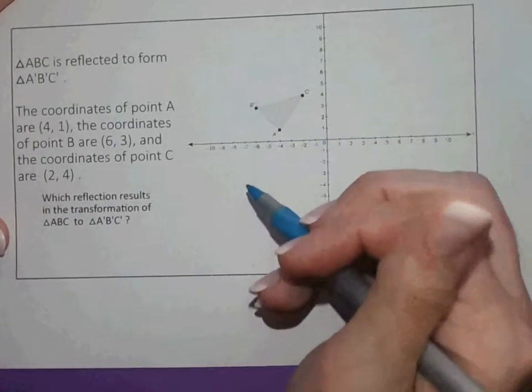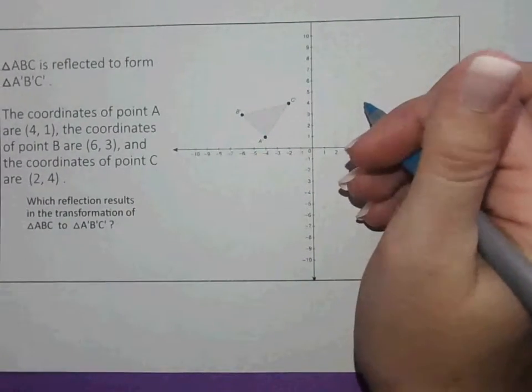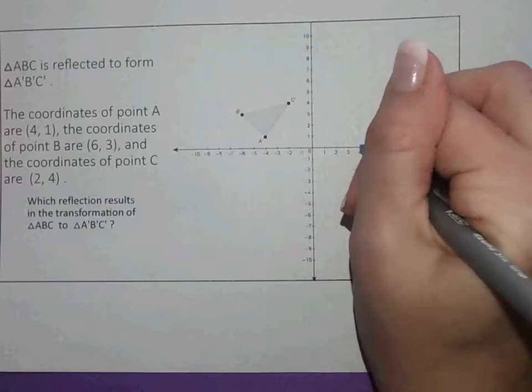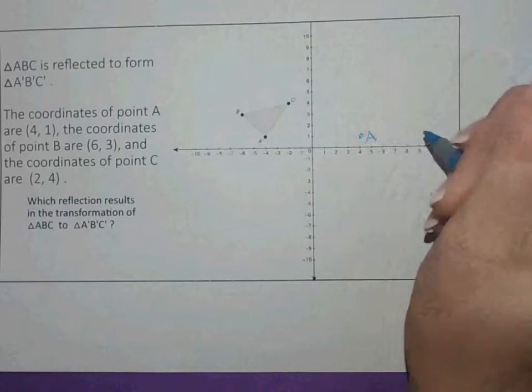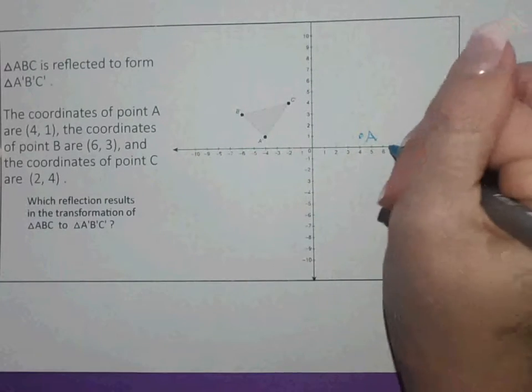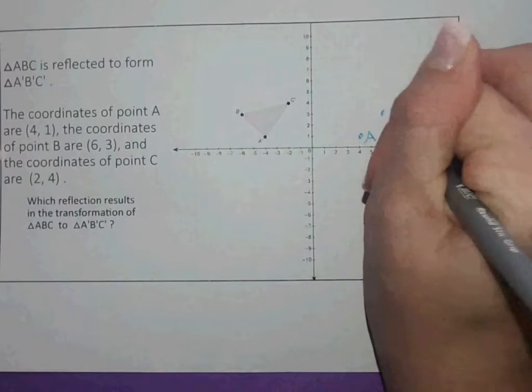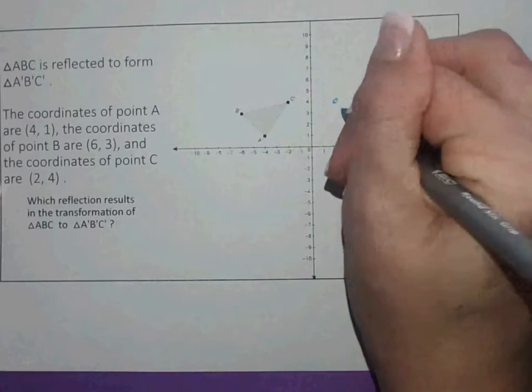Okay, ABC is reflected to form A-prime, B-prime, C-prime. The coordinates of A are 4, 1. The coordinates of B are 6, 3, and C are 2, 4.